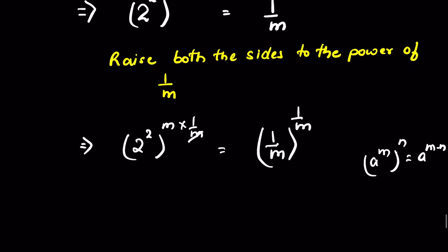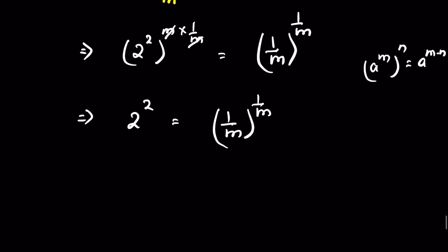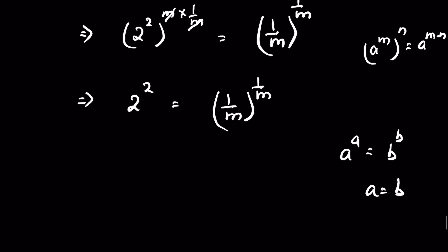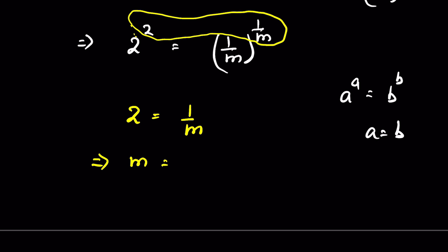The m and m cancel, giving us 2 raised to the power 2 equal to 1 upon m raised to the power of 1 upon m. We know that if a raised to the power a equals b raised to the power b, then a equals b. So 2 equals 1 upon m, which means m is equal to 1 upon 2.